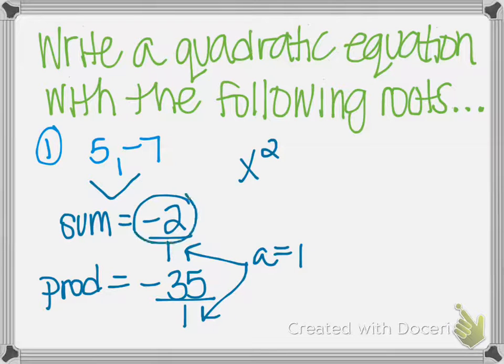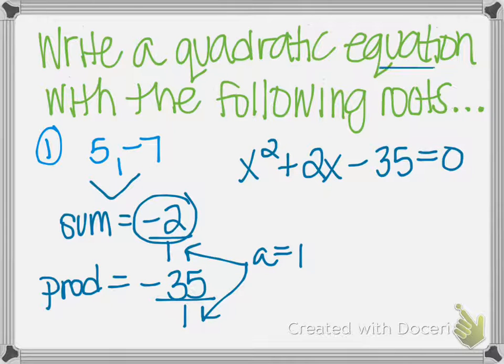So that means my quadratic equation starts out with just plain old x squared. Since my sum was negative 2, remember I changed my sign, so this becomes positive 2x, and my product just gets plopped at the end. And I always add a plus 0 because it did ask me for an equation, so I can't just leave it as an expression. And that's my final answer.